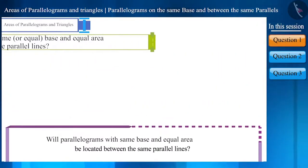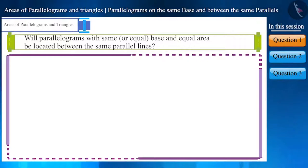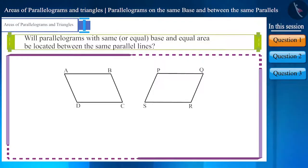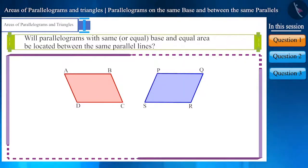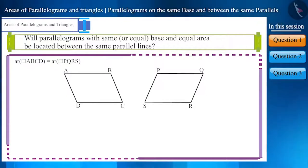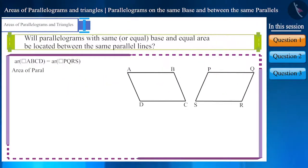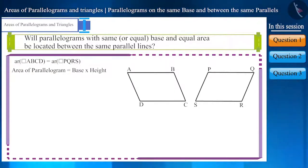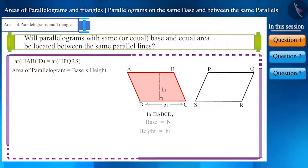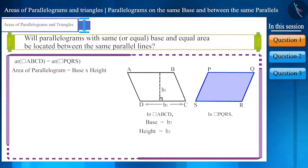Let's start today's session with this. Suppose we are given two parallelograms ABCD and PQRS of equal bases which are equal in area. The formula for the area of a parallelogram is base multiplied by height. Suppose the base and height of parallelogram ABCD are B1 and H1 respectively. Similarly, the base and height of parallelogram PQRS are B2 and H2 respectively.